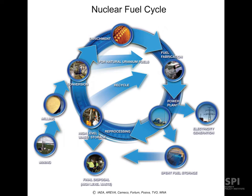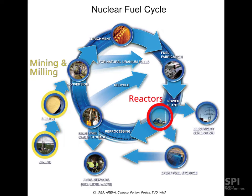The basic elements of a nuclear fuel cycle we typically break into the mining and milling area, which is where you mine the raw material that you'll use as a fuel. Then the reactors, which are used for either research, production of plutonium — usually for weapons purposes — or power reactors for the production of power.